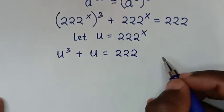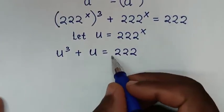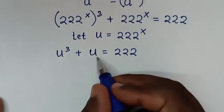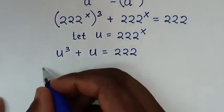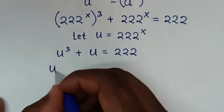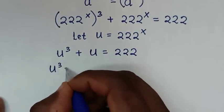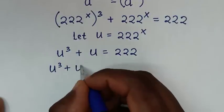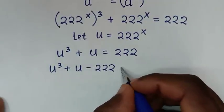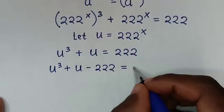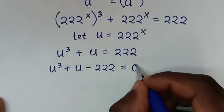In the next step, we'll take 222 to the left side, so it will be u power of 3 plus u minus 222 is equal to 0.